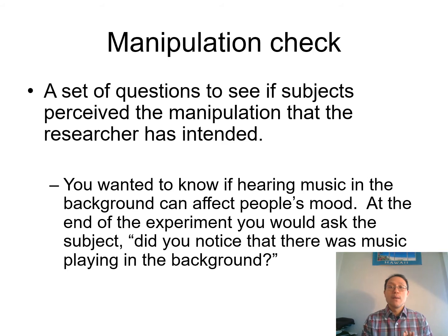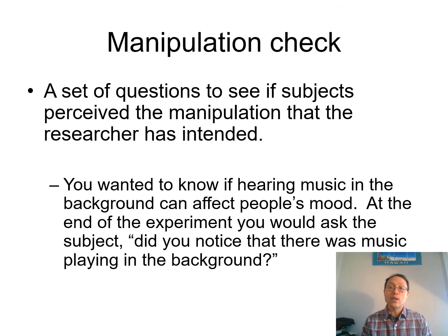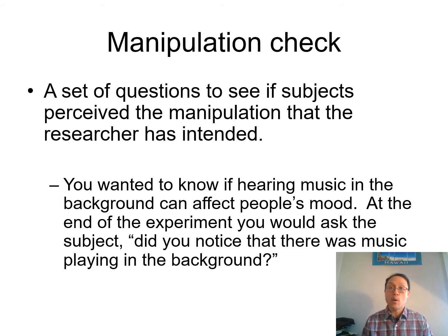Now let's talk about manipulation checks. A manipulation check ensures that whatever manipulation you're intending to do is actually perceived by the participants. For instance, if hearing music in the background can affect people's mood, at the end of the experiment you ask the subject whether they noticed music playing. Another example is the Darley and Latané smoke-under-the-door study, where the manipulation involved a perceived emergency. If participants did not notice the smoke coming under the door, that is a failed experiment. Manipulation checks are really important for verifying whether your intended manipulation worked.